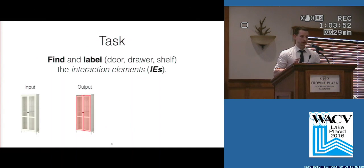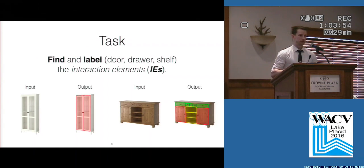So what's the task? We want to find and label the different interaction elements. As you can tell from these example images, a naive approach using rectangle detection might not perform as well.